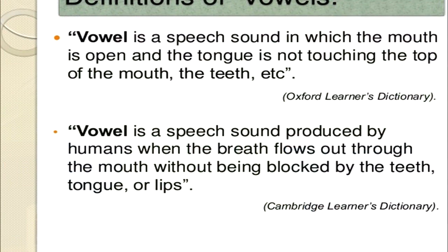Now let's discuss about vowels. A vowel is a speech sound in which the mouth is open and the tongue is not touching the top of the mouth, the teeth, etc. — as defined by Oxford Learner's Dictionary. Cambridge Learner's Dictionary defines it as: a speech sound produced by humans when the breath flows out through the mouth without being blocked by the teeth, tongue or lips.